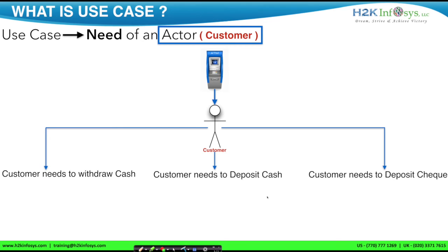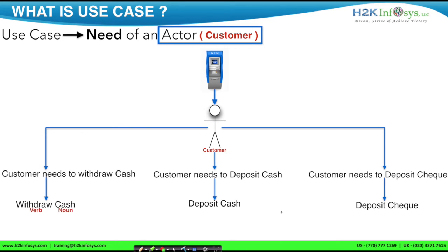Let's see how that would look. In the first case, we modify to 'withdraw cash.' In the second case, 'deposit cash.' In the third case, 'deposit check.' Here, 'withdraw' is a verb and 'cash' is a noun — that satisfies the industry standard. In the second case, 'deposit' is a verb and 'cash' is a noun, satisfying the two-word and verb-followed-by-noun condition. In the third case, 'deposit check' — the first word is a verb and the second word is a noun.